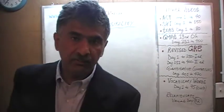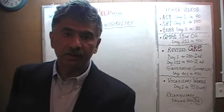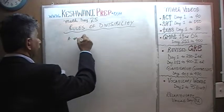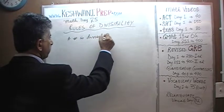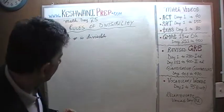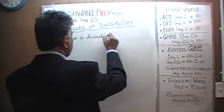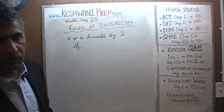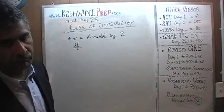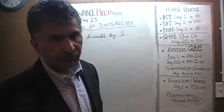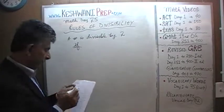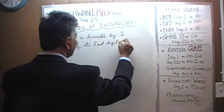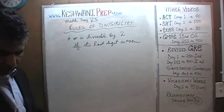How do we know if a given number is evenly divisible by the number we try to divide it by? For example, how do we know if a given number is divisible by 2? A number is divisible by 2 if its last digit is even.